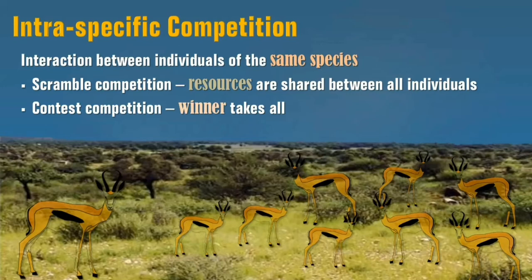Males defend territories in areas where polygyny potential is highest. During the rut, females are attracted primarily to the resources on the territory and not to the rams themselves. But only males that successfully defend their territories will breed with females. Polygyny is a mating system in which one male lives and mates with multiple females, but each of the females will only mate with a single male.